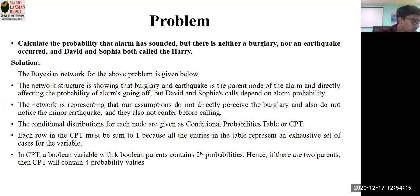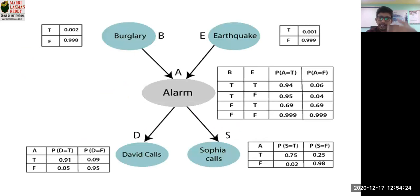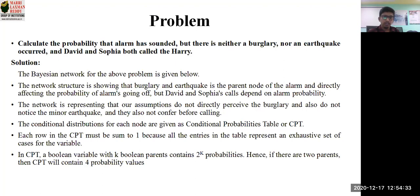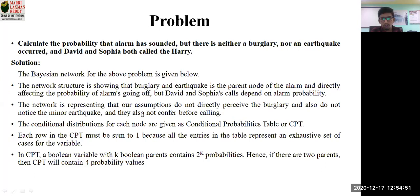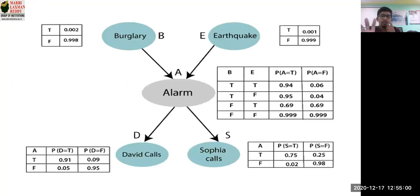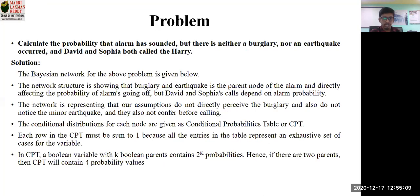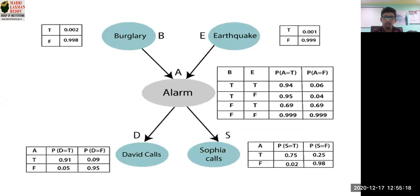In the network structure, burglary and earthquake are the parent nodes for alarm, directly affecting the probability of the alarm going off. David and Sophia's calls depend on the alarm probability, so David and Sophia are children of the alarm node. By looking at the diagram alone, we cannot directly say whether burglary or earthquake happened — that's why we need calculations. The conditional distributions for each node are given as a conditional probability table.